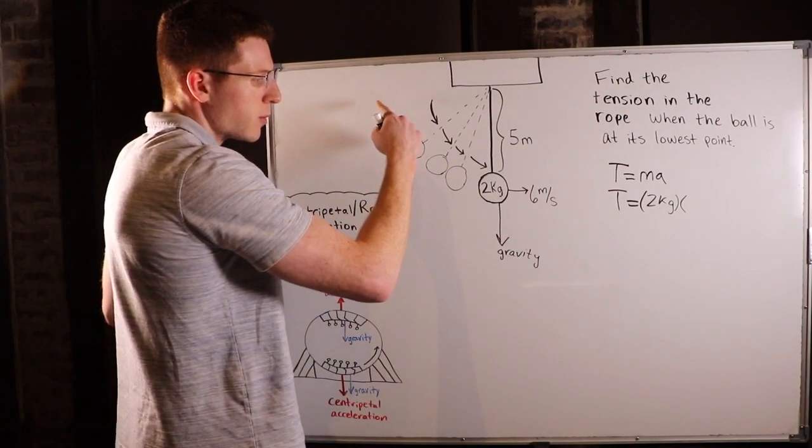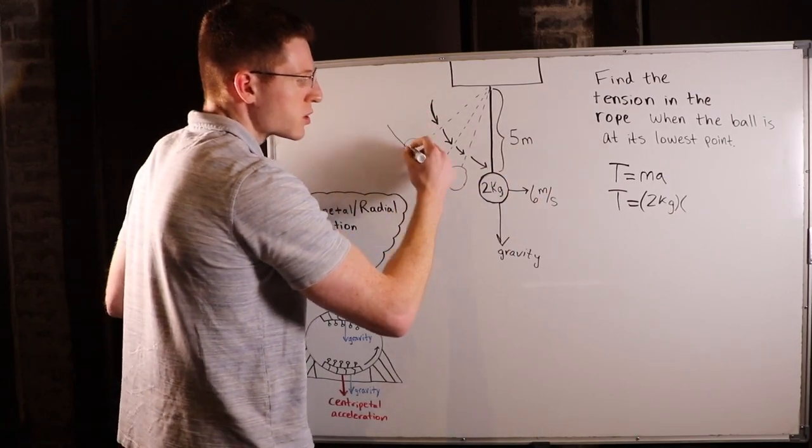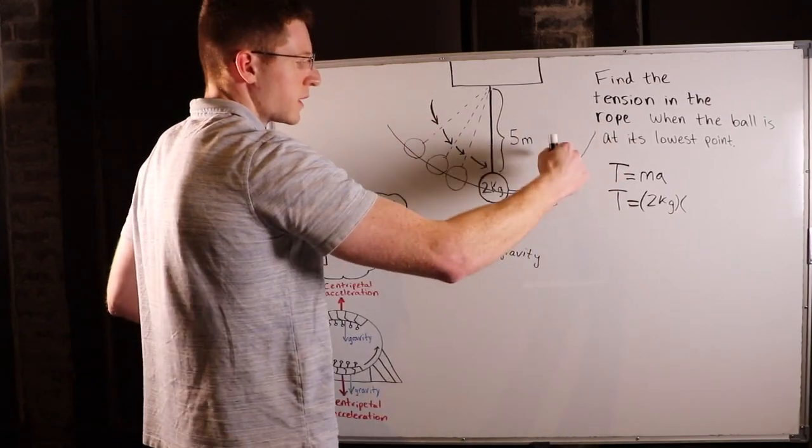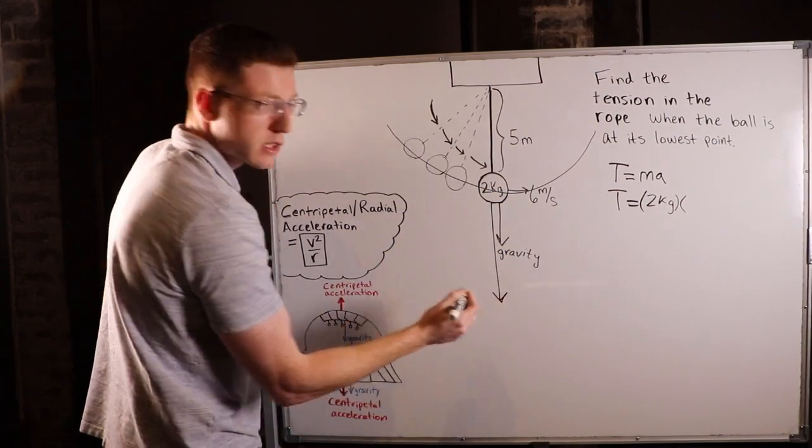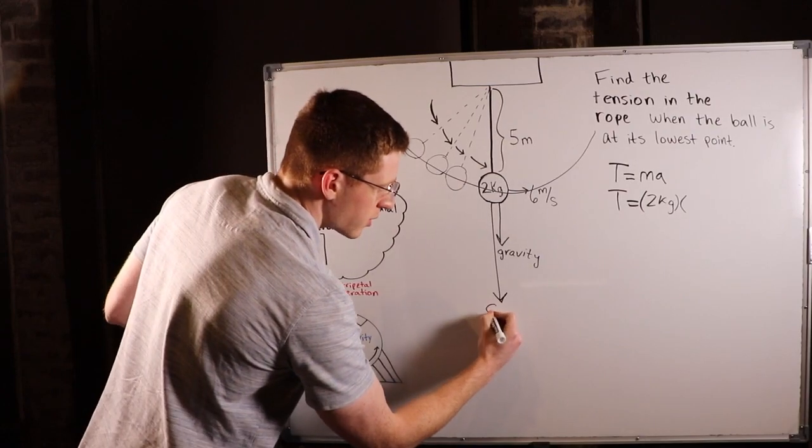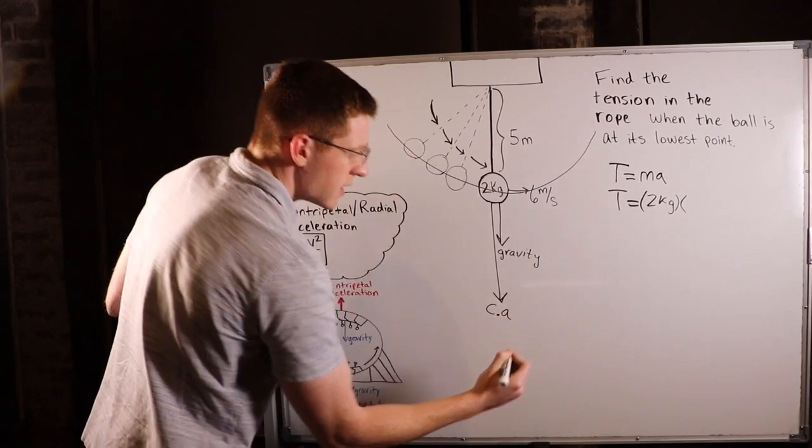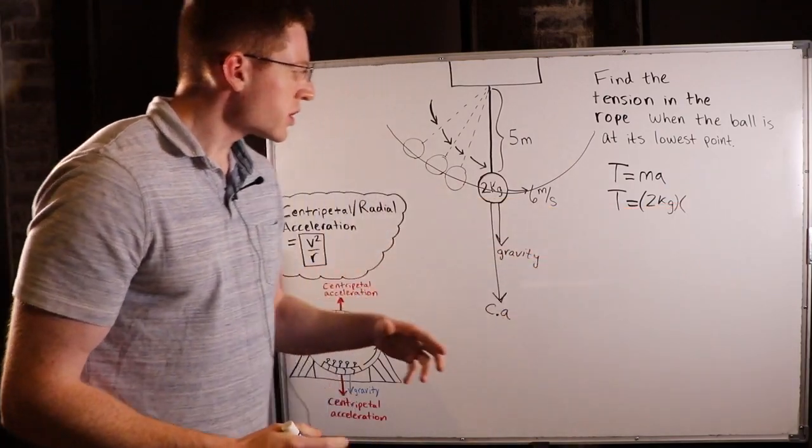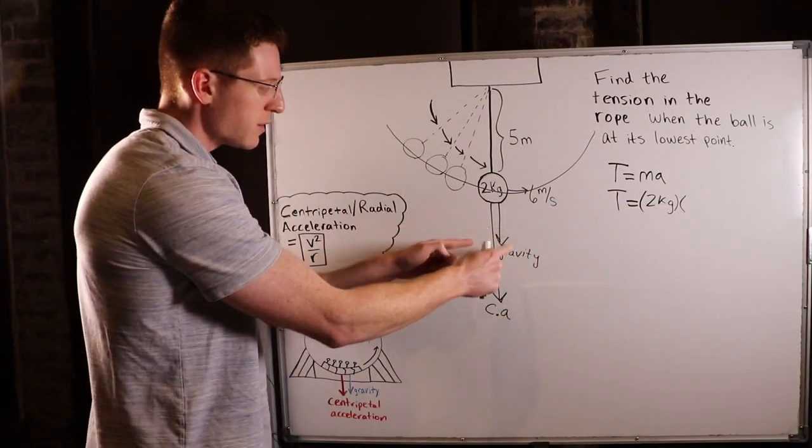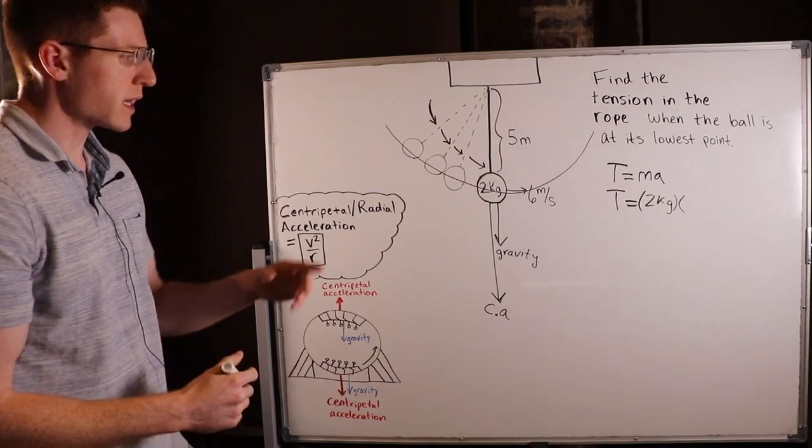So back to our problem, we know we're moving in sort of a partial circle here like this. So centripetal acceleration at this point is going to be acting straight out of that circle. So I'll abbreviate centripetal acceleration CA. So now we know for our acceleration, we actually have to add together gravity and centripetal acceleration to account for this.